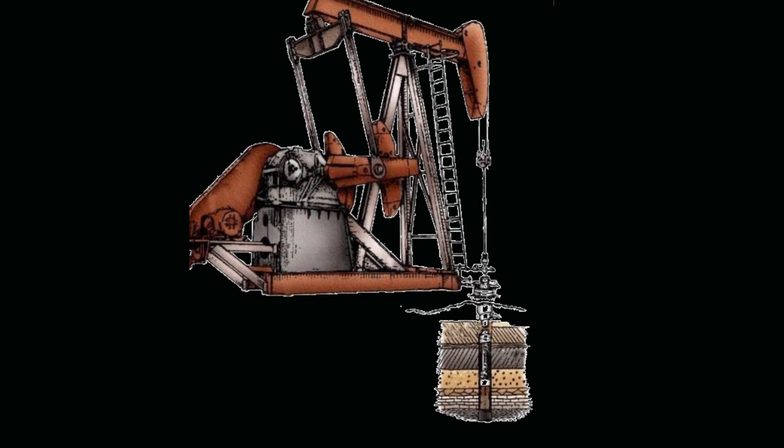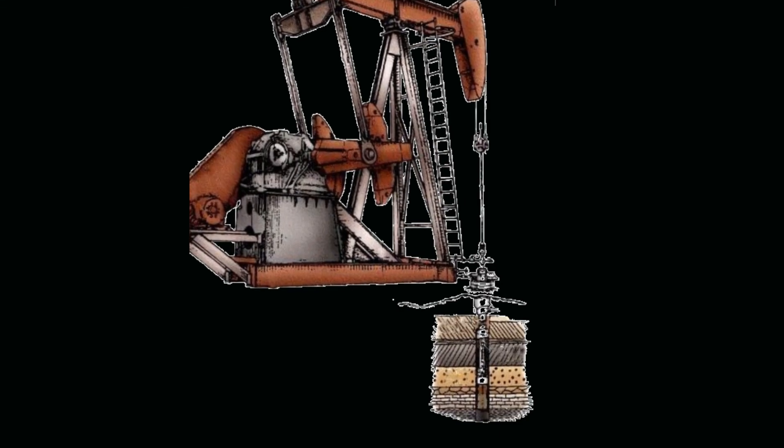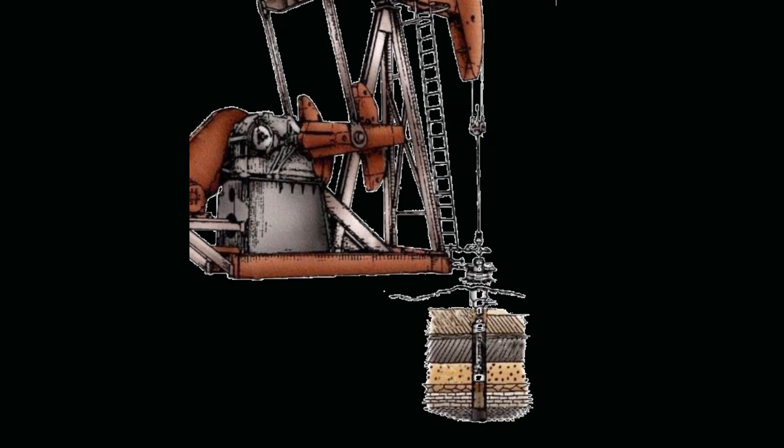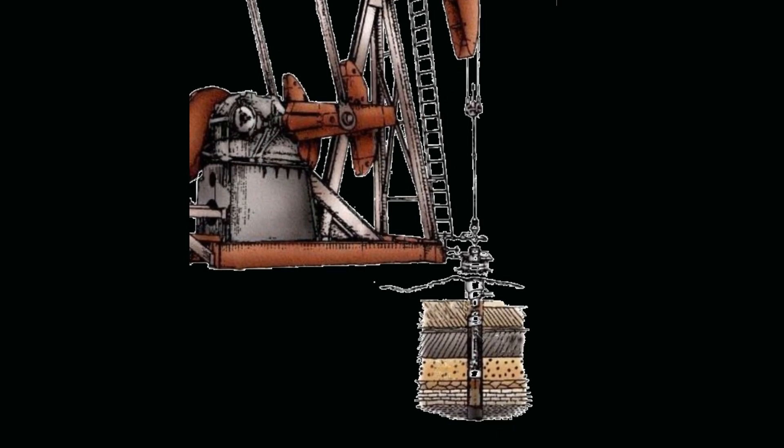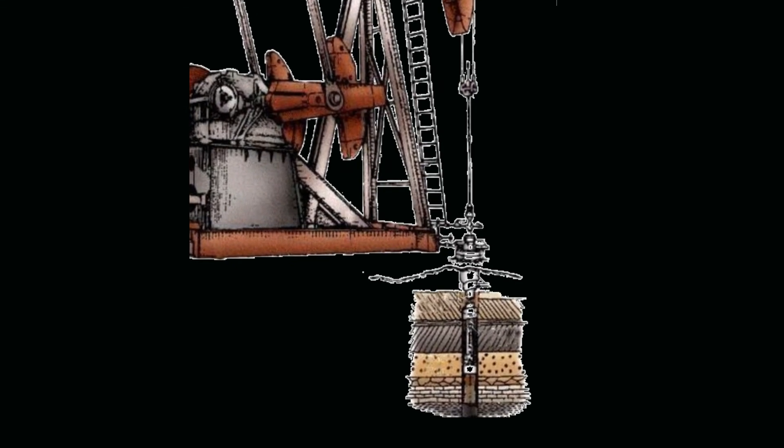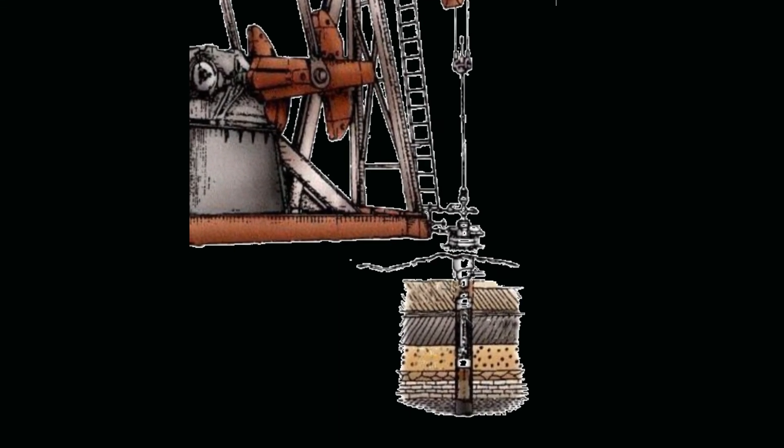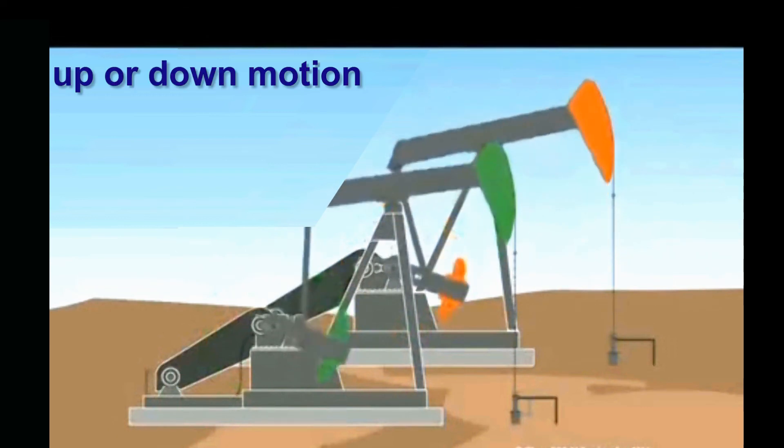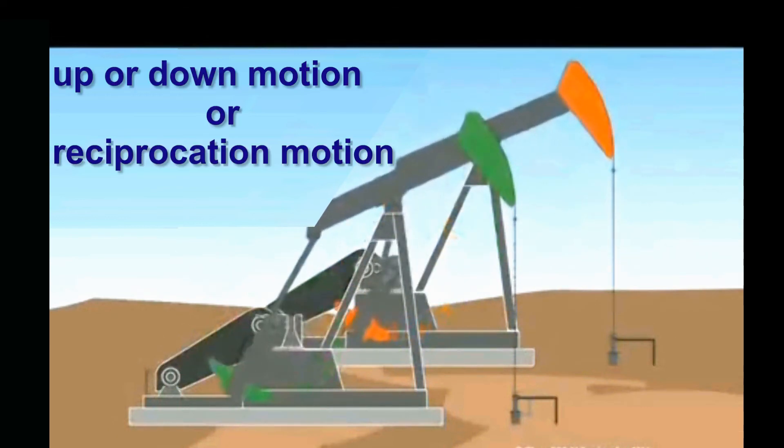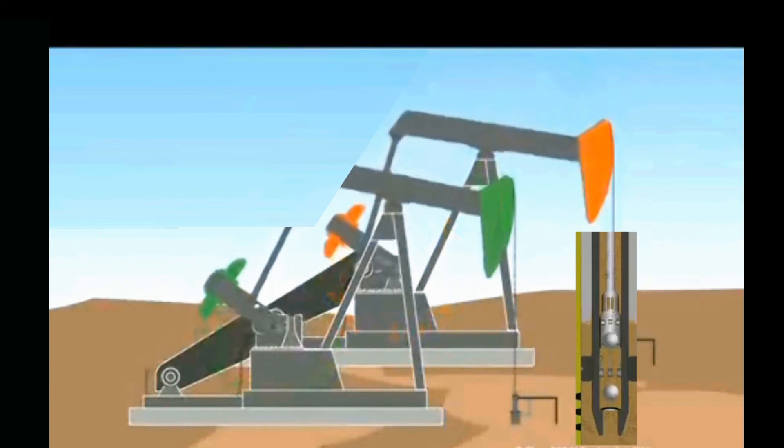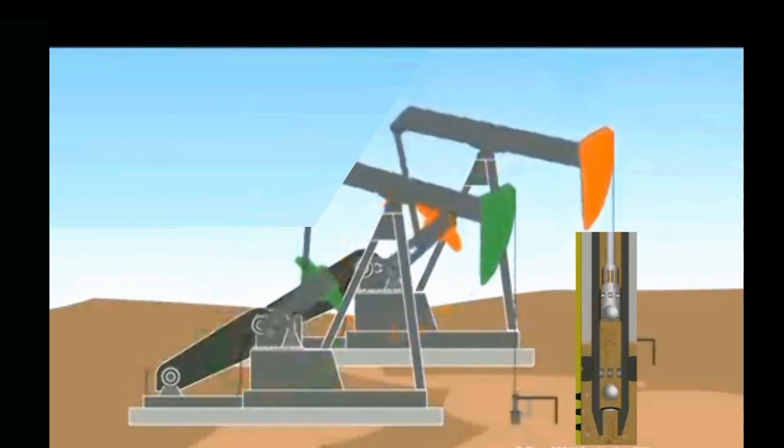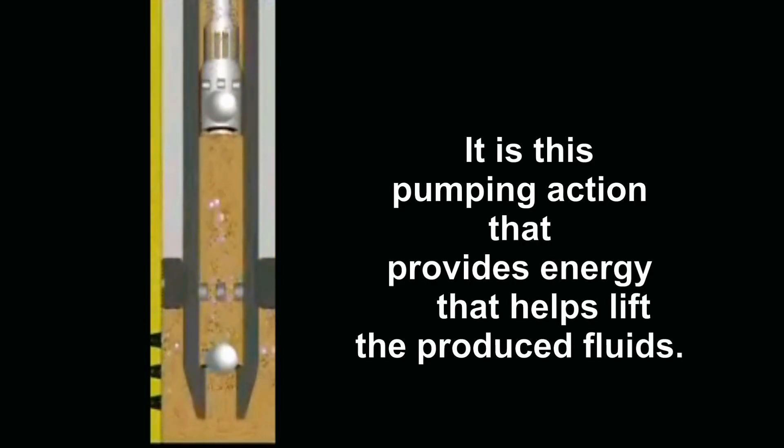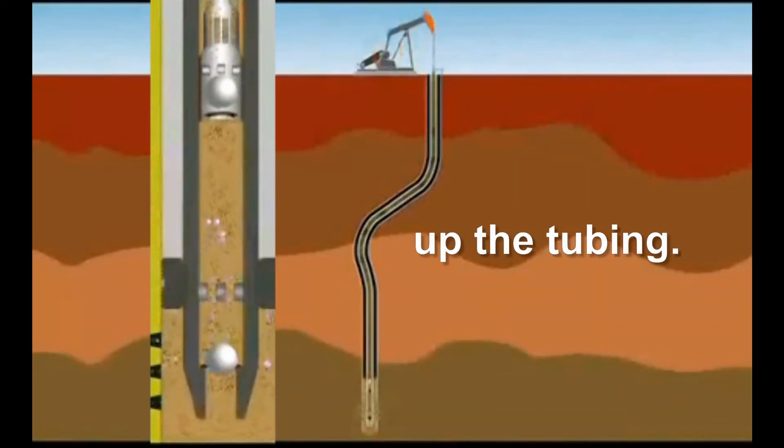Keep in mind that although sucker rod pumps can come in many shapes and configurations, they are still run into the hole on a rod string that latches into the tubing at the bottom of the hole. The sucker rod's up and down motion or reciprocation motion strokes the plunger up and down in the pump barrel. It is this pumping action that provides the energy that helps lift the produced fluids up the tubing.